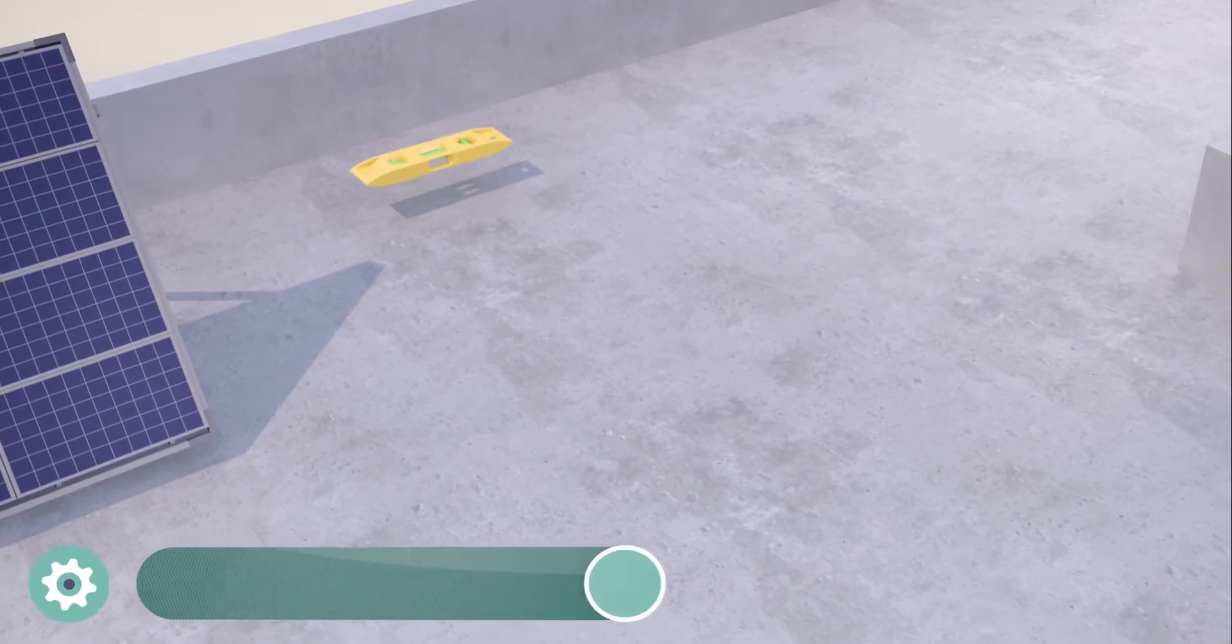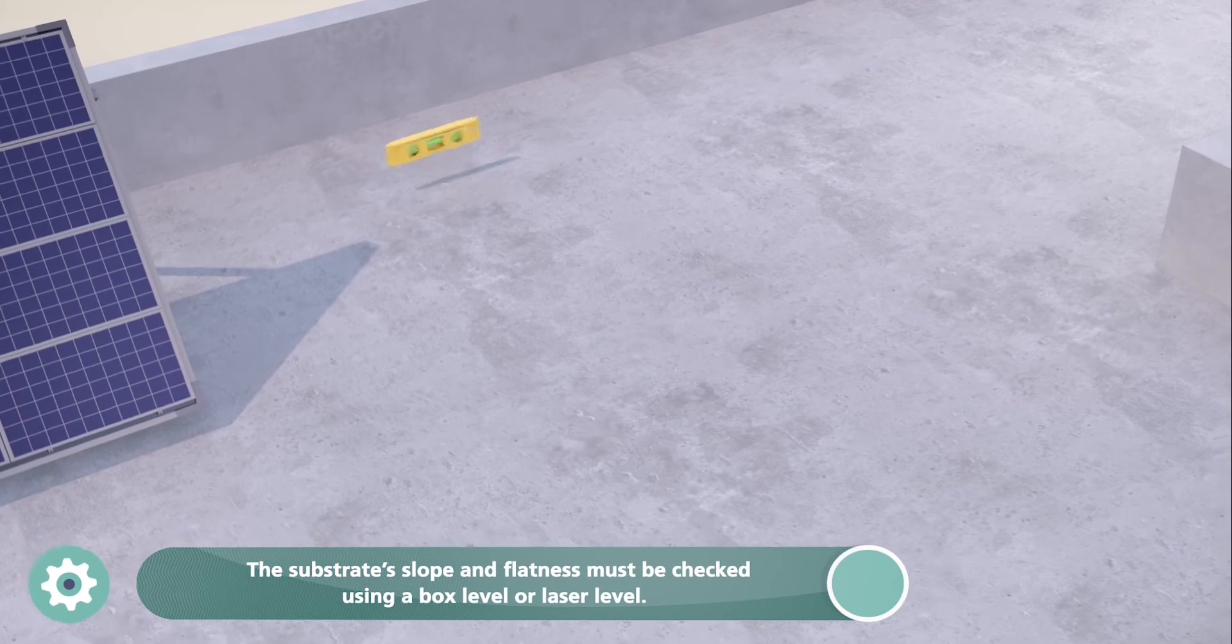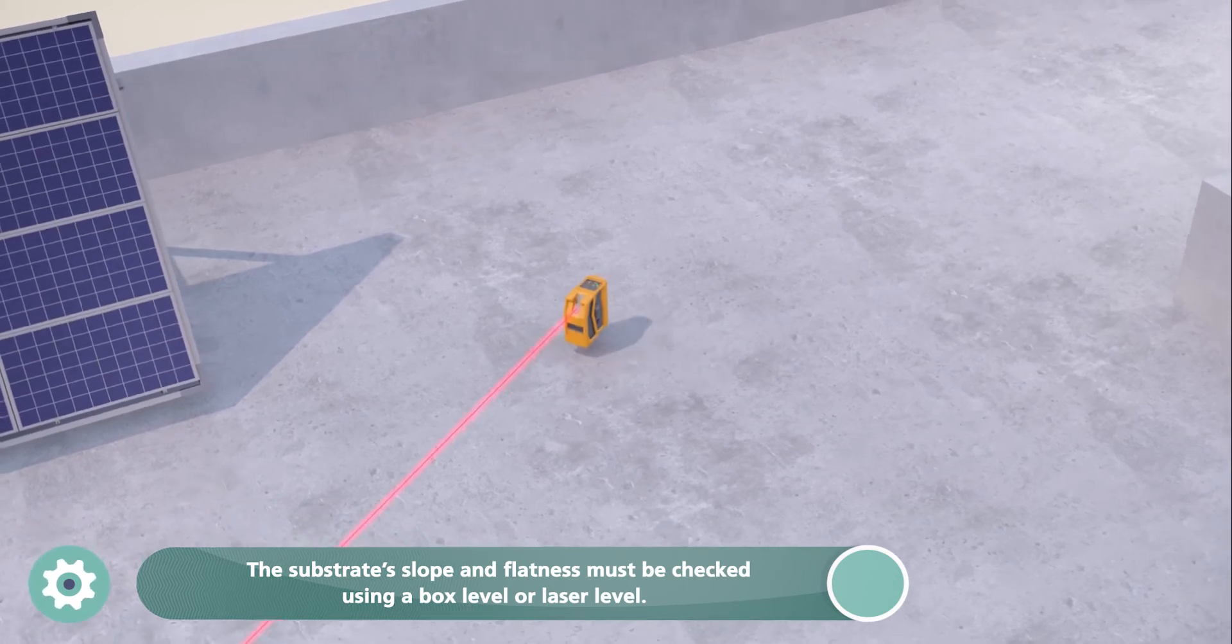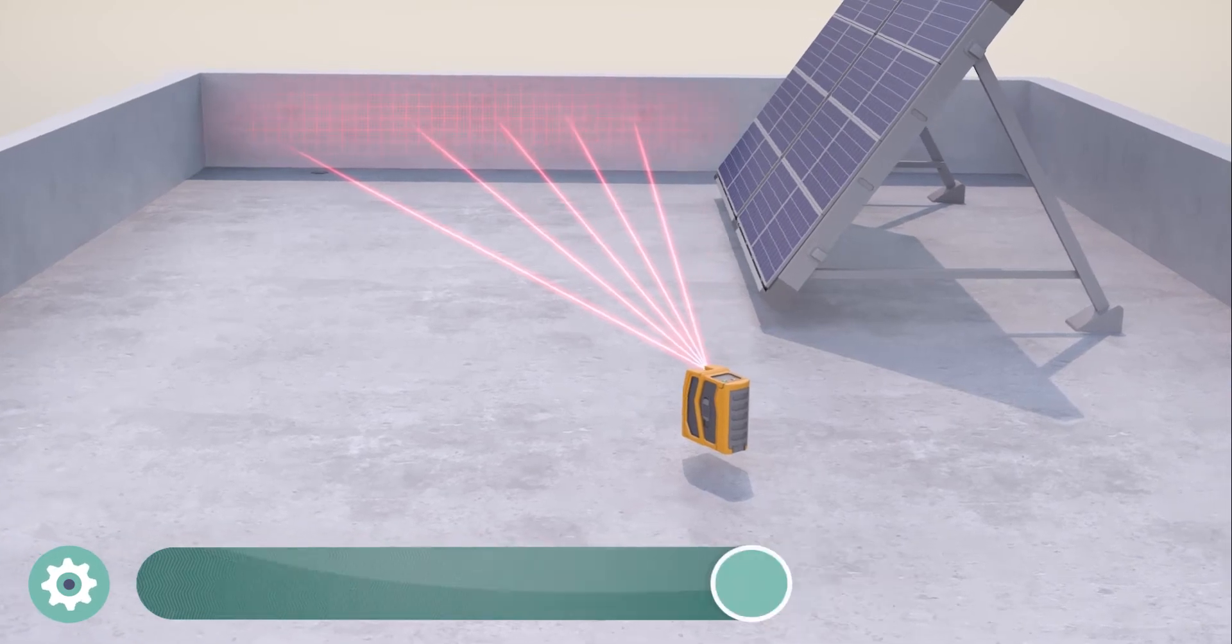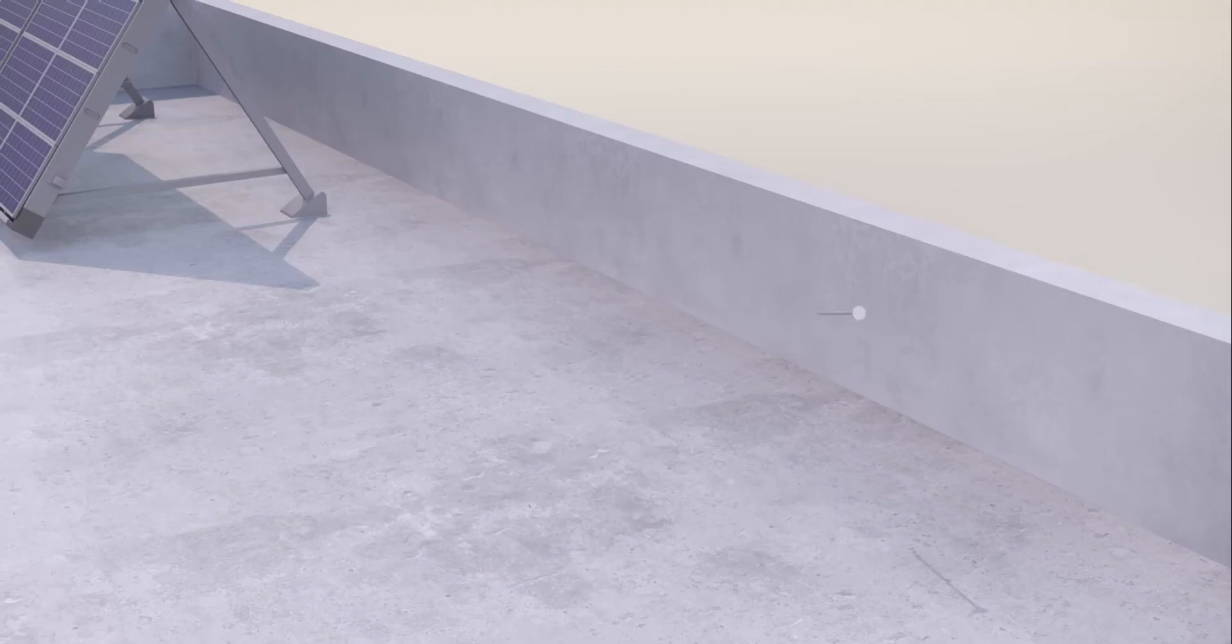The substrate's slope and flatness must be checked using a box level or laser level on its entire surface. A long box level should be applied to the substrate pointing towards the roof drain or drainage funnel.